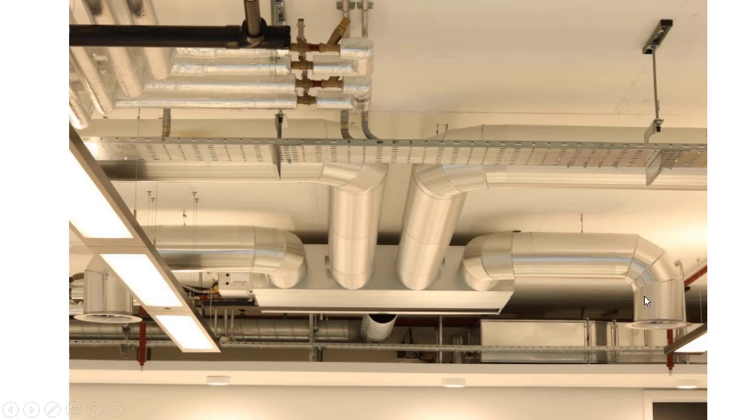Here this small duct is supplying to the same area where this FCU is installed and here this second duct is also supplying to this area while these two ducts are taking the air to the adjacent spaces. So now let's discuss about different types of FCUs.